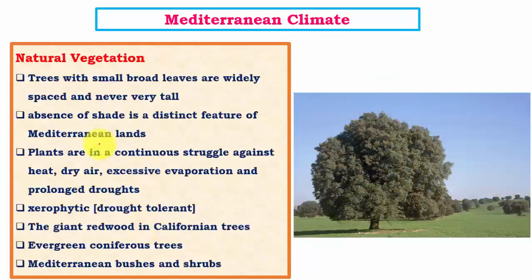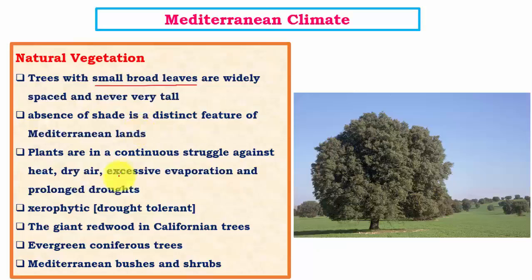The natural vegetation of the Mediterranean climate features short trees with very small broad leaves, mainly to conserve water — wide leaf area would increase transpiration loss. The small leaves check transpiration especially during the dry summer season. Trees are very widely spaced because they compete for the limited water available, since only winters have some rainfall. Absence of shade is a distinct feature due to widely scattered trees. Most vegetation is xerophytic — drought-tolerant — similar to the cactus and aloe vera found in desert regions.